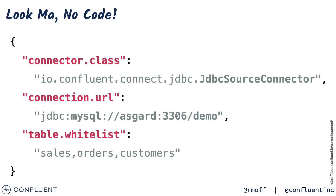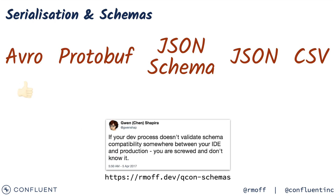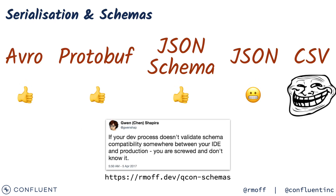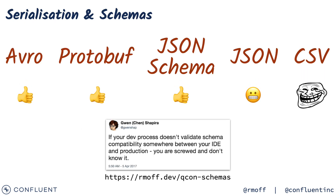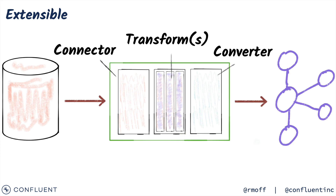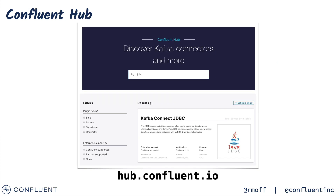It's entirely configuration file based, which makes it nice and accessible to lots of developers to use. It supports serialization and deserialization in lots of different formats, and you specify this as part of the pluggable architecture, so you can pick your connectors, your converters, and build out your pipelines based on all different components you can find on Confluent Hub.